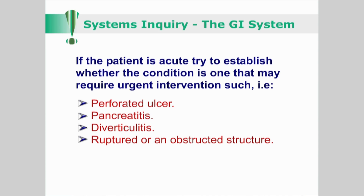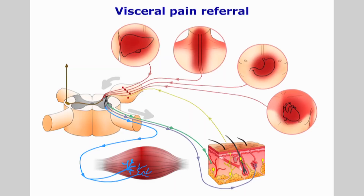Visceral pain can be difficult to localize as organs and associated tissues are supplied by the autonomic nervous system. Visceral afferent nerves synapse at various ganglia and form plexuses as they enter at one or more spinal levels. Unlike somatic nerve supply, the viscera are not confined to a unilateral and ipsilateral distribution. Visceral afferent fibres relay these sensations mostly via sympathetic nerves.